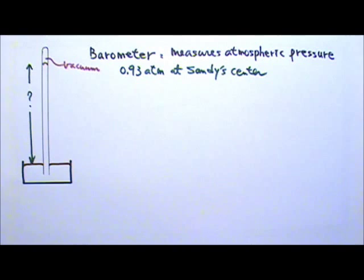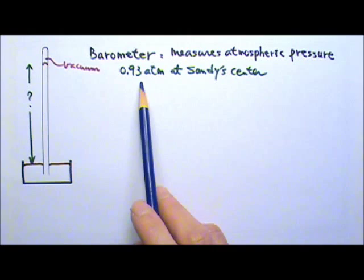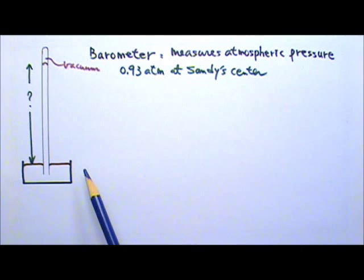In any case, in the afternoon of October 29, 2012, Hurricane Sandy had a sustained wind speed of 90 mph and a pressure of 0.93 atm at its center. Find the height of the mercury column in a barometer when the atmospheric pressure is 0.93 atm.